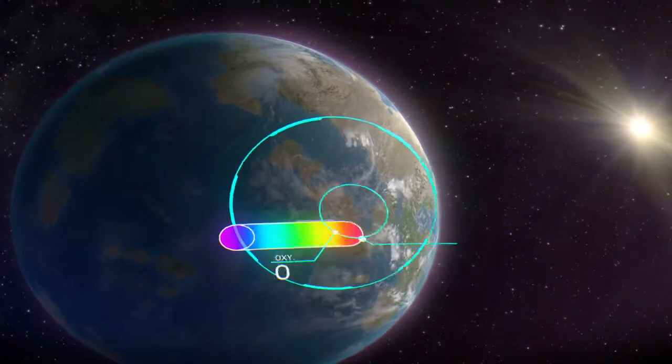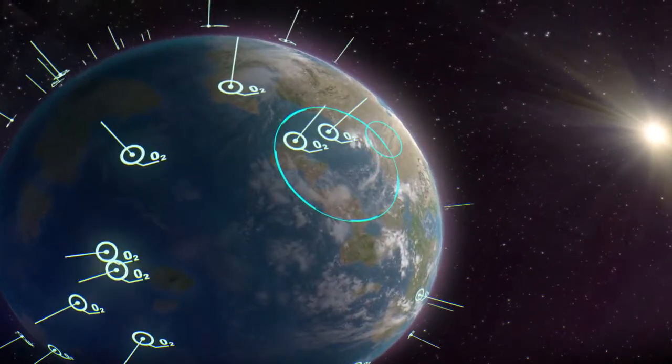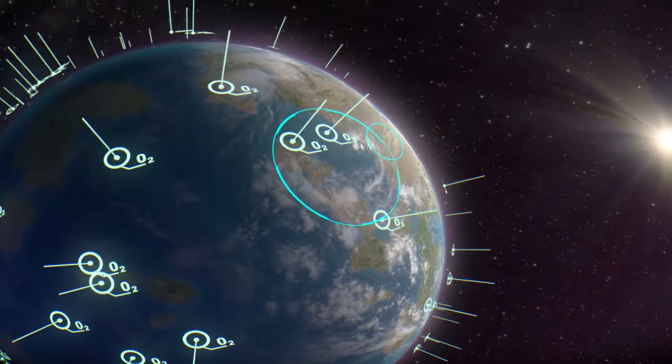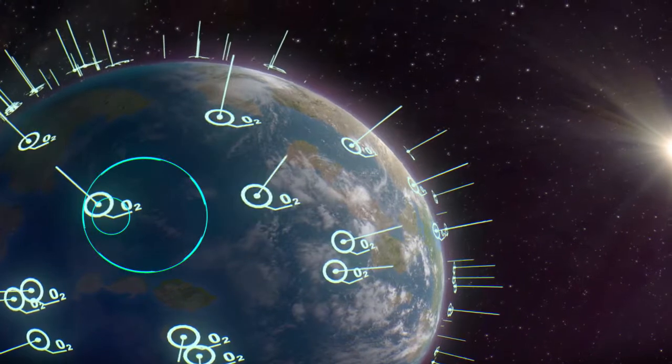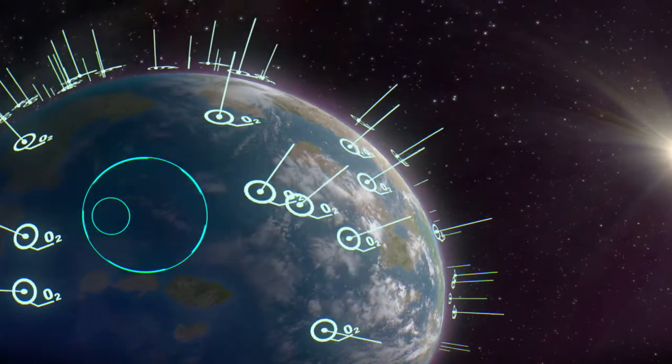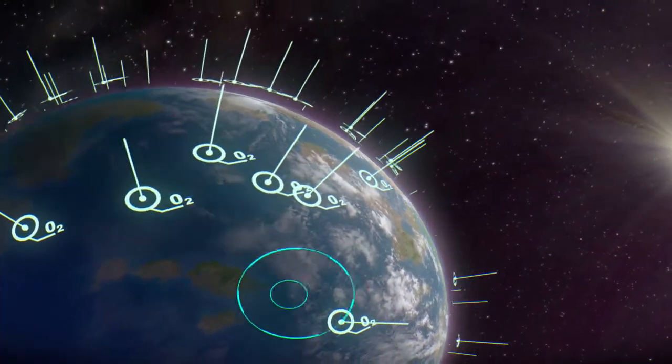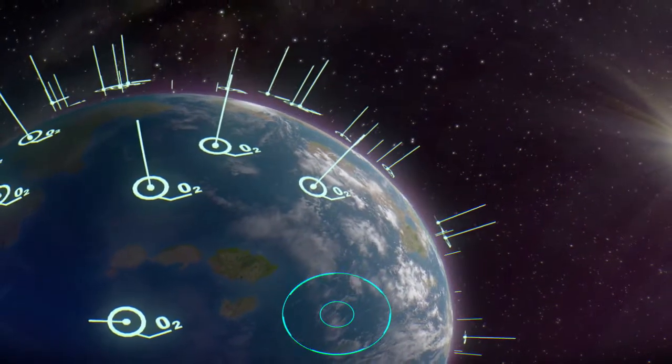On planet Earth, most of the oxygen in our atmosphere is produced by microbes in our oceans. So, if oxygen is being detected in this alien planet's atmosphere, something must be constantly producing it. Something alive.